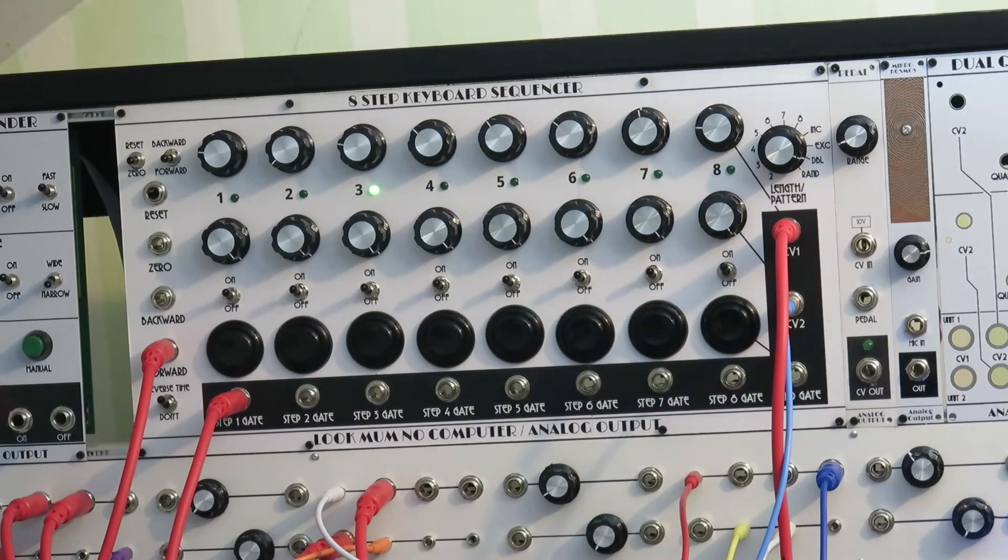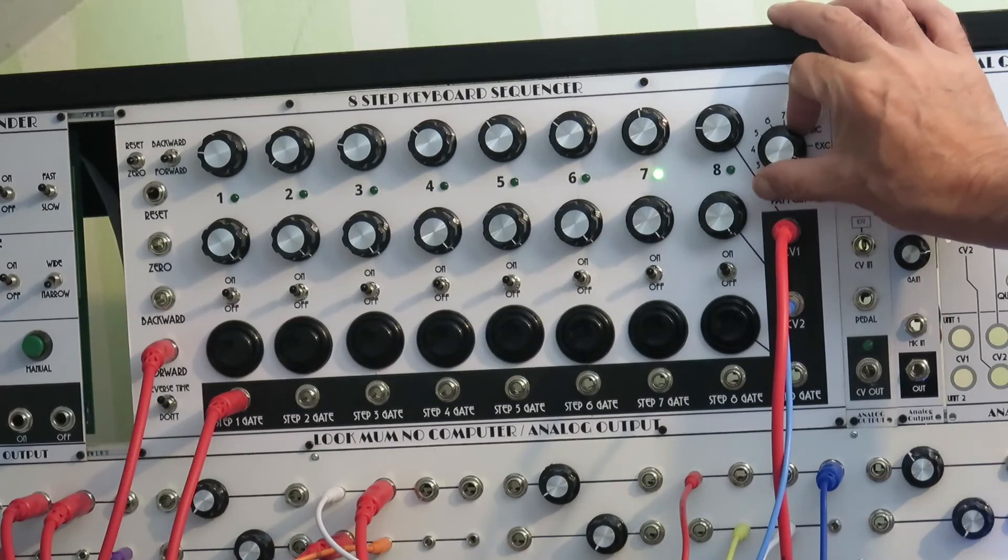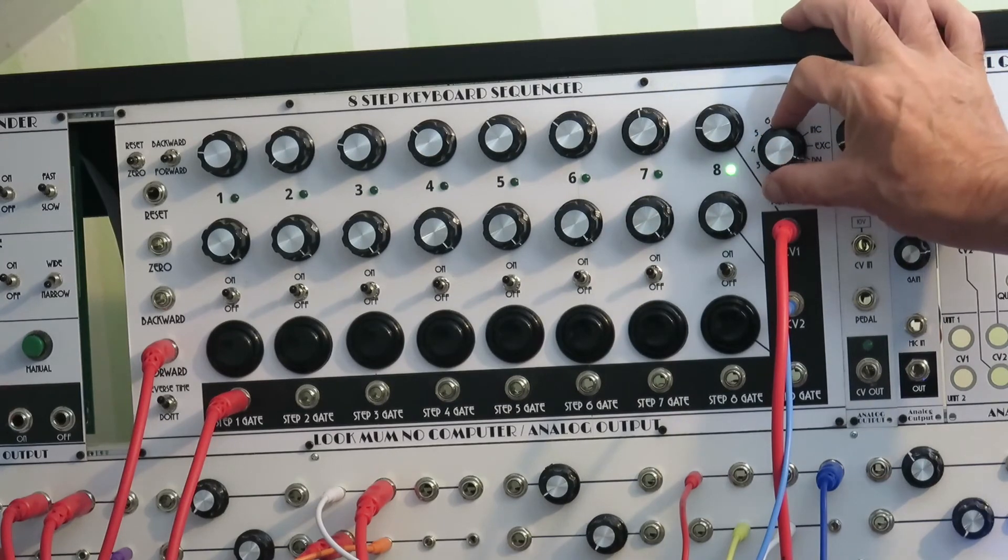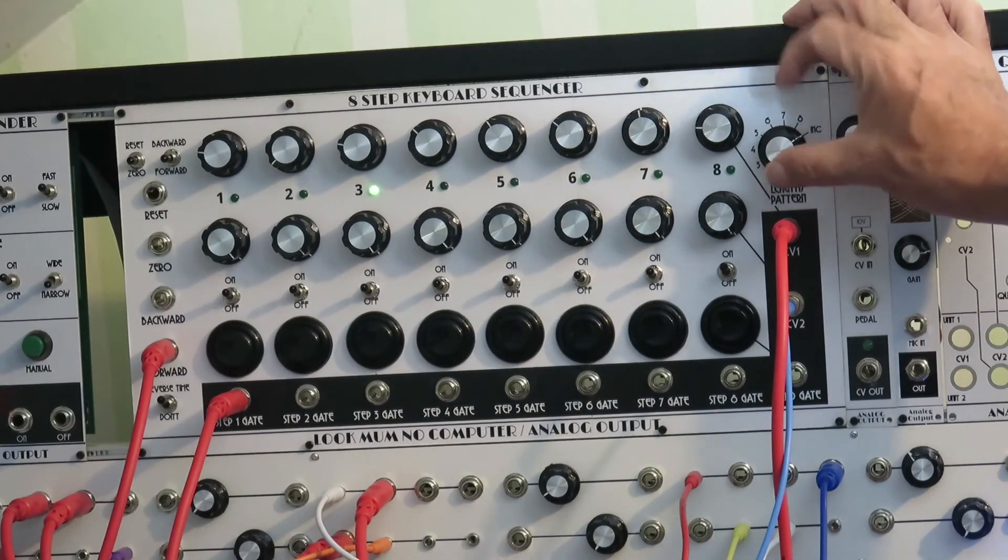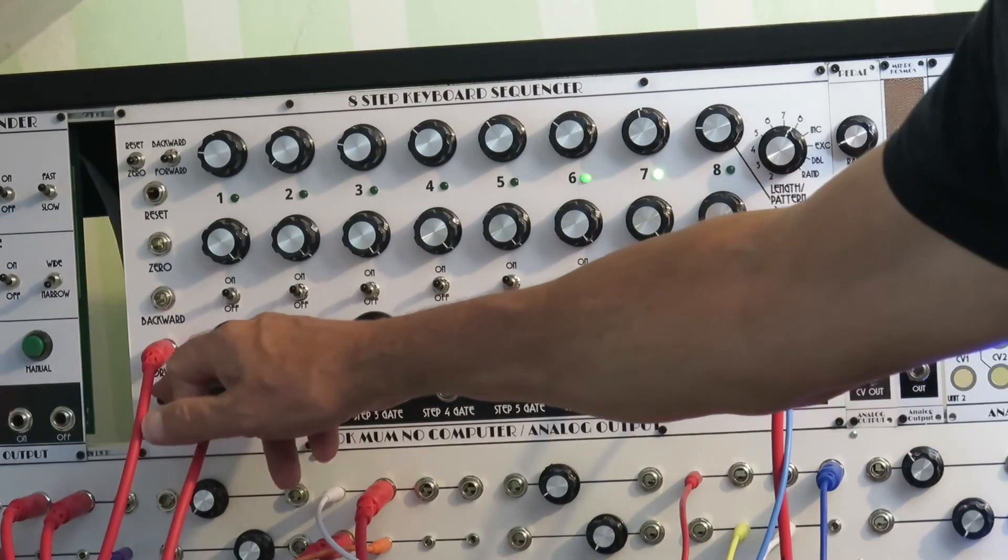And the double also works in backward mode. In fact, all of the patterns work in backward mode, but the random and inclusive and exclusive pretty much sound the same whether you run them forwards or backwards, so it doesn't make much difference, but the double does work nicely backwards.